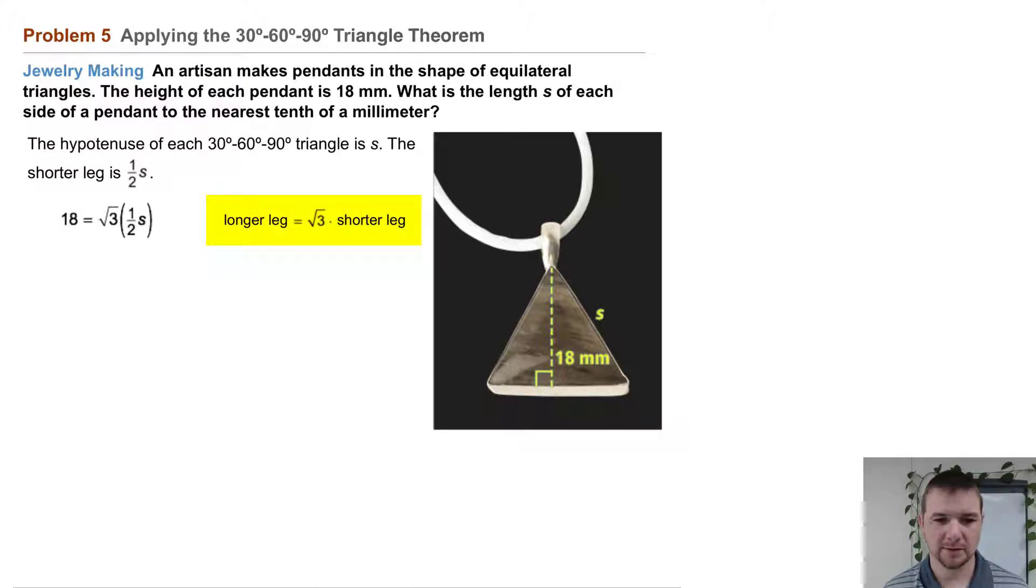We simplify: 18 equals the square root of 3 over 2 times s. And we continue to simplify, multiplying each side by 2 over the square root of 3.